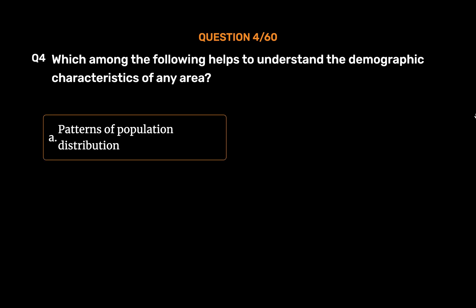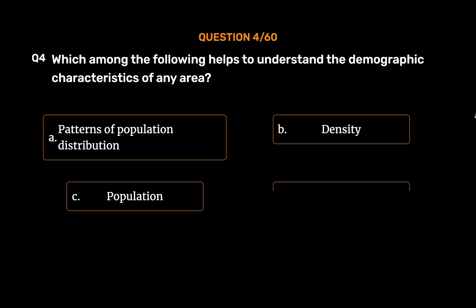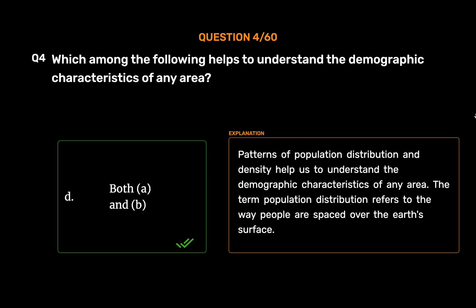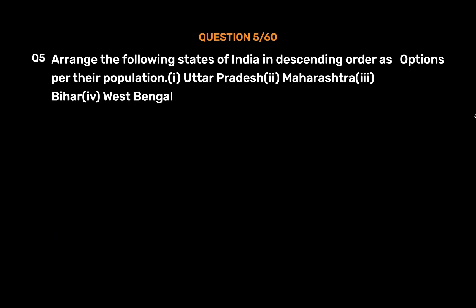Question number 4: Which among the following helps to understand the demographic characteristics of any area? Option A: patterns of population distribution, option B: density, option C: population, option D: both A and B. The correct answer is option D, both A and B. Patterns of population distribution and density help us understand the demographic characteristics of any area. The term population distribution refers to the way people are spaced over the earth's surface.